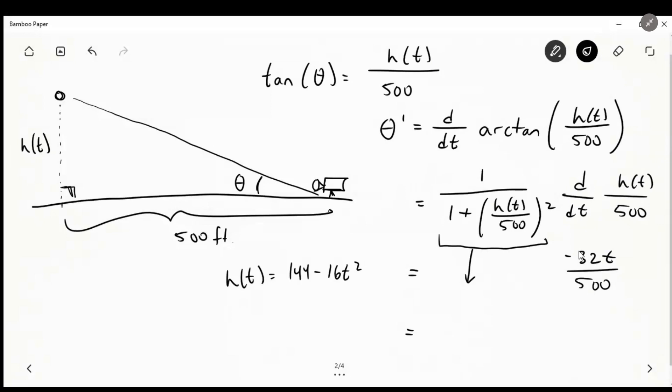d dt of H of T over 500. We know H of T is 144 minus 16 T squared. So d dt of H of T over 500 is just going to be minus 32 T over 500. So now we can express this as 1 plus 144 minus 16 T squared all over 500 squared, times negative 32 T over 500.